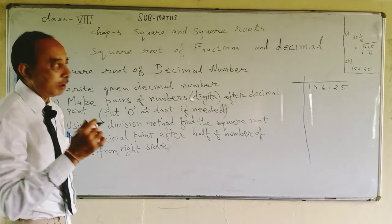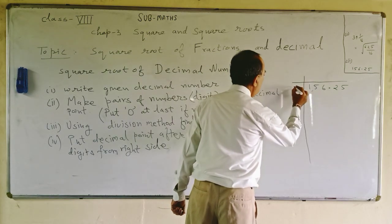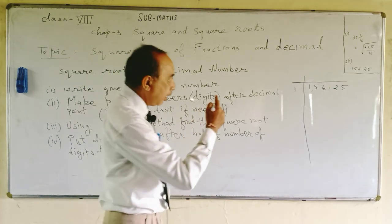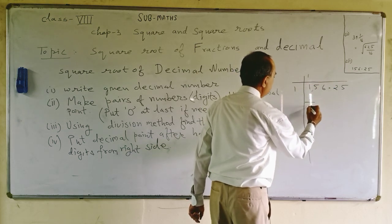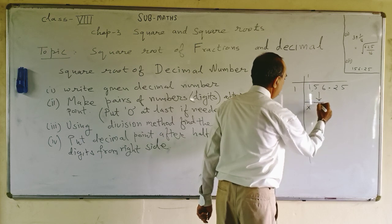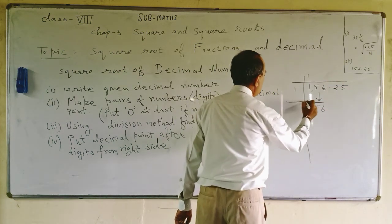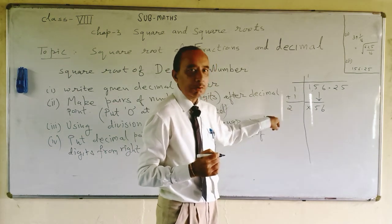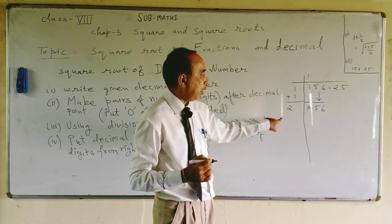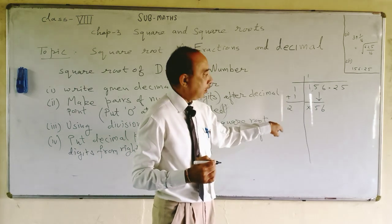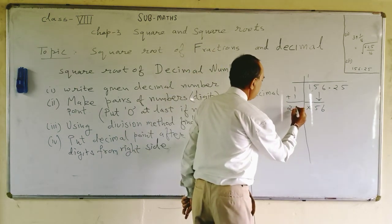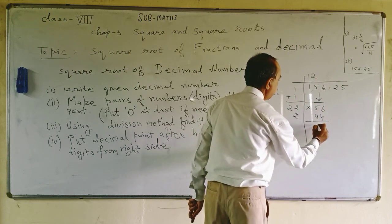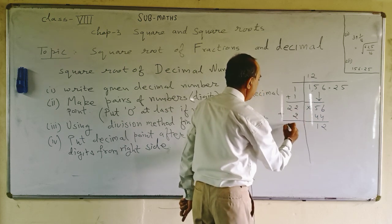Now we will use the long division method to find the square root. Instead of a multiplication table, we will use squares: one square, two square, three square. We take 1 squared equals 1 on the first group, then bring down the next pair, which is 56. Add 1 and 1 to get 2. Put 21 and multiply: 21 times 1 equals 21, which is less than 56. Try 22 times 2 equals 44. Write down 2, subtract, then add 22 and 2 to get 24.